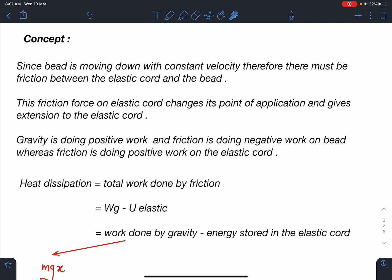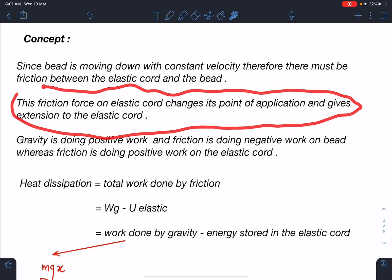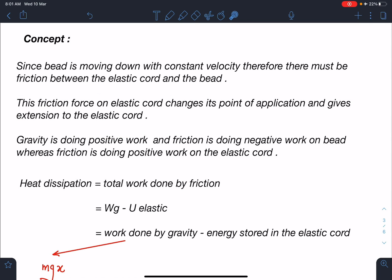It is given that bead is moving down with constant velocity, so therefore there must be some friction between the elastic cord and the bead. This is the first thing to notice. Second, by action-reaction pair, this friction force will also be acting on the elastic cord. As the bead is sliding down, the point of application of this friction force is going to change for the elastic cord.